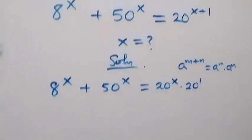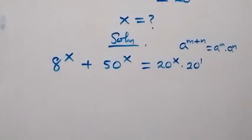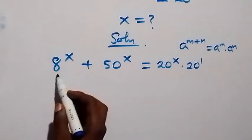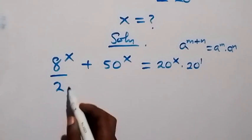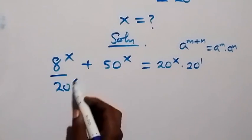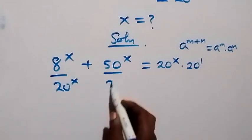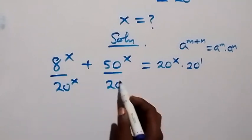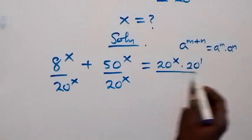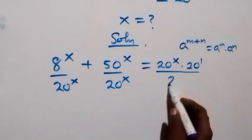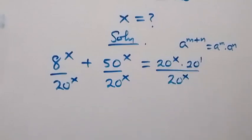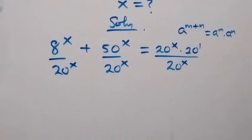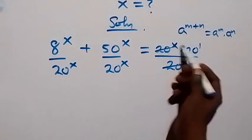In the next step, let's divide through by 20 raised to the power x. So we divide through by 20 raised to the power x on this side also. Then 20 raised to the power x cancels out here.